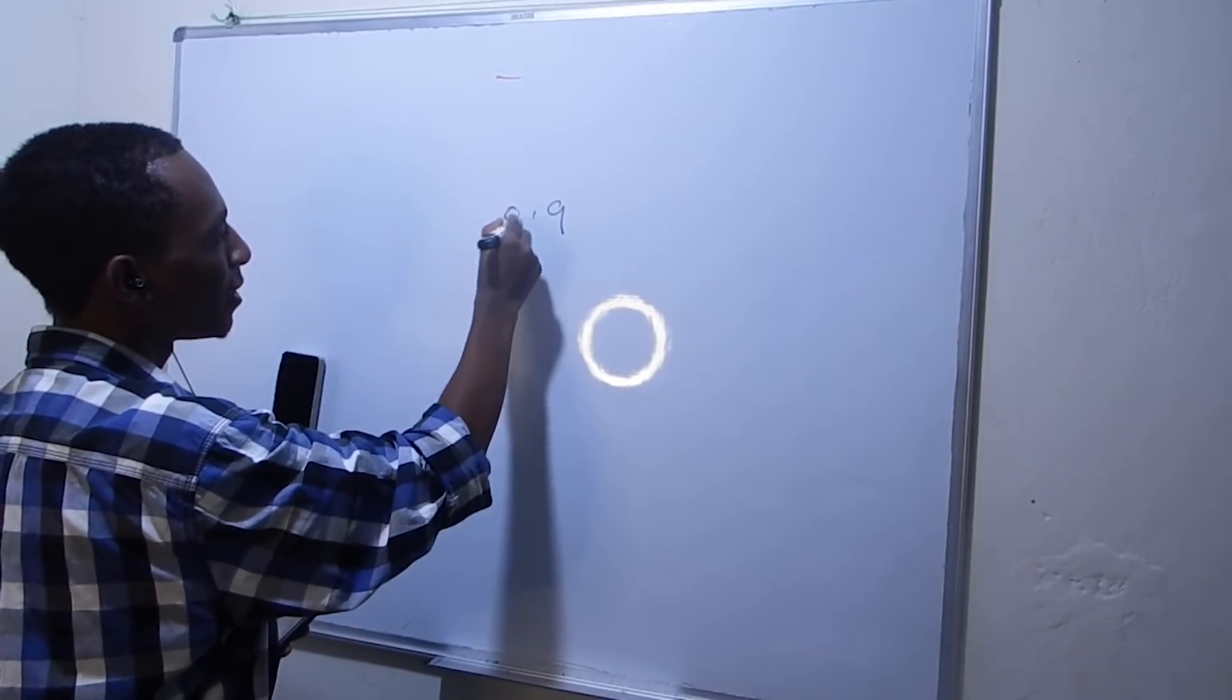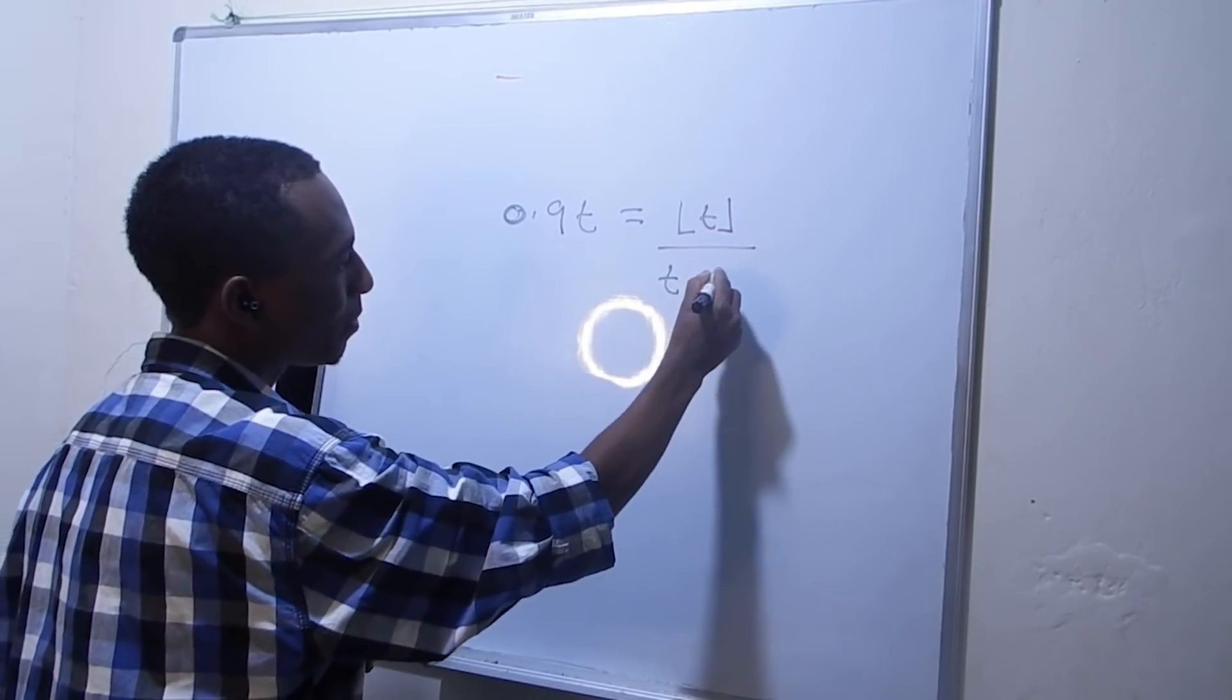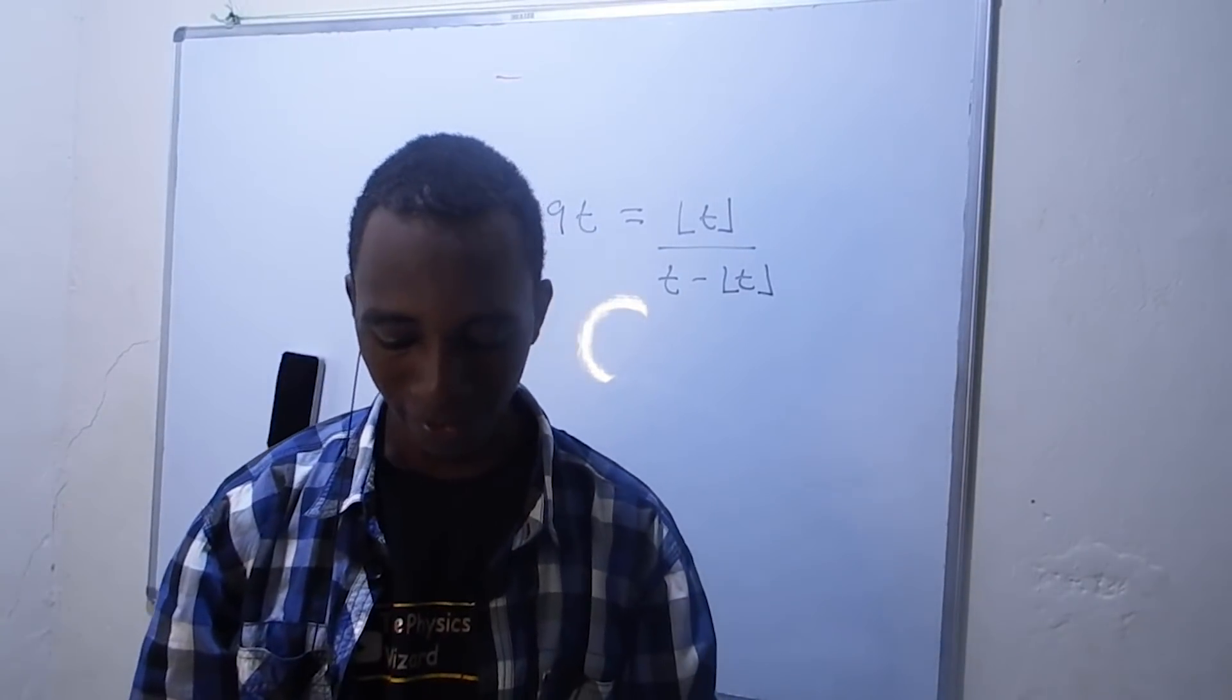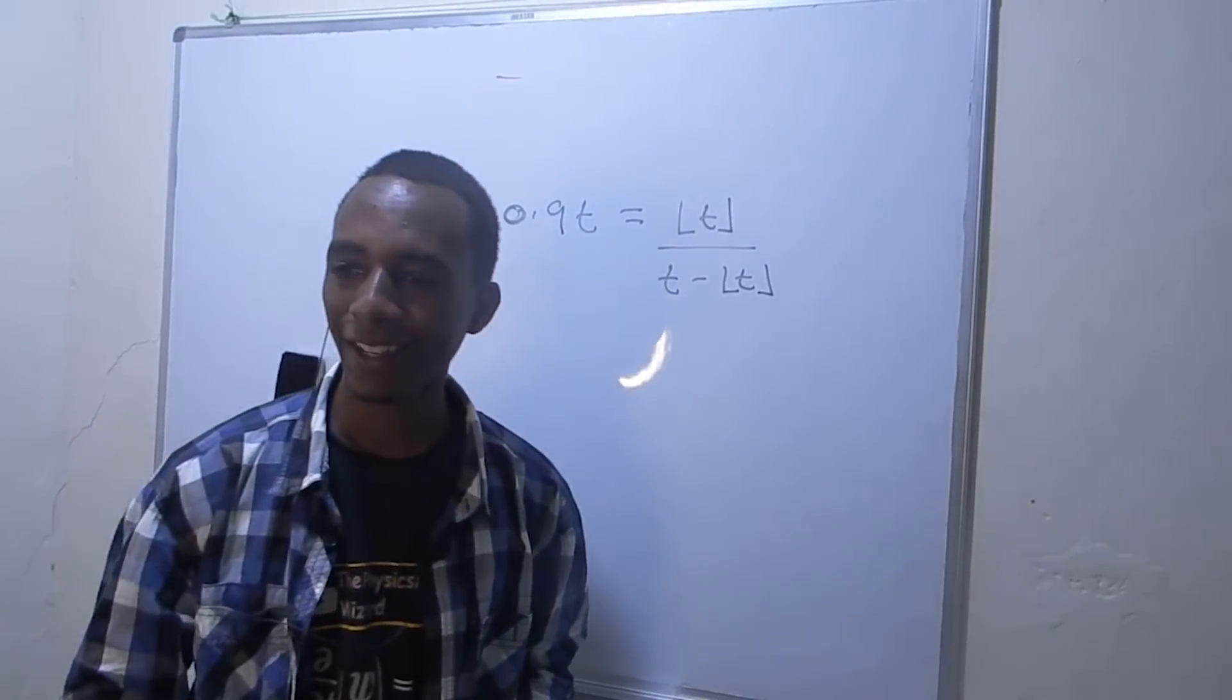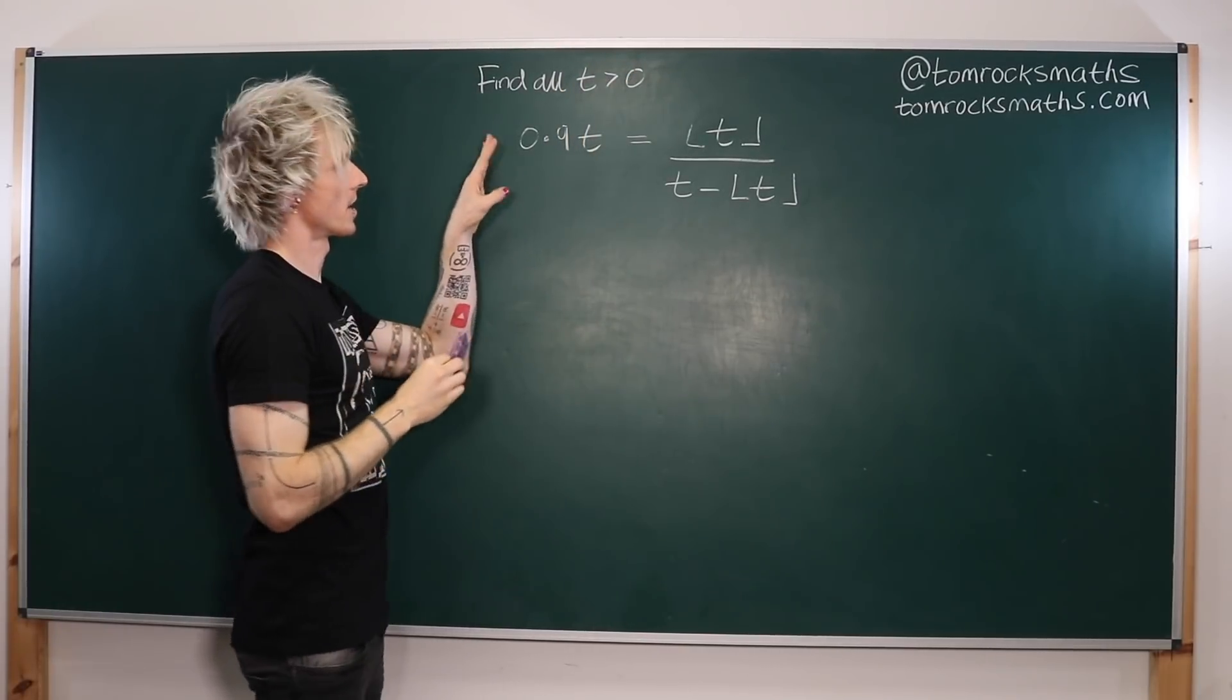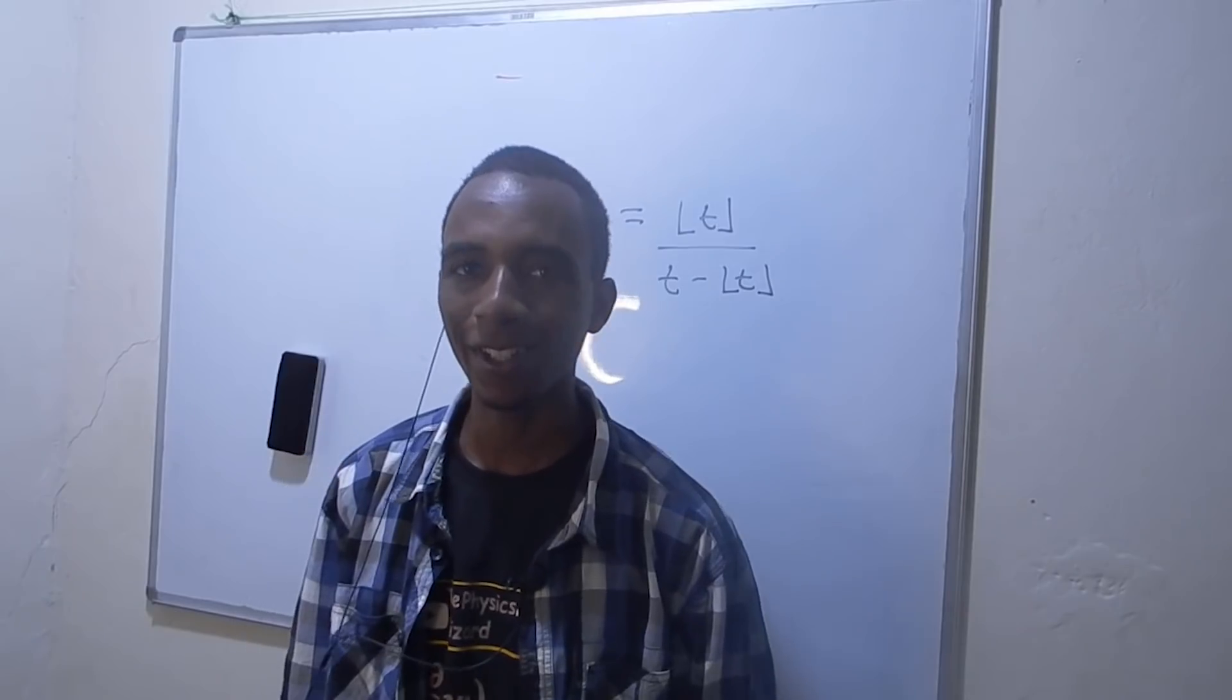So it's 0.9, so 0.9t equals, so we have the floor of t divided by t minus the floor of t, and so that's the equation. I'll read out the question. So it goes, you have to find all positive values of t that satisfy this equation here. Okay, so I think I've written this out correct, so we're trying to find all t greater than 0, satisfying 0.9 times t is equal to the floor of t divided by t minus the floor of t. Yeah, sure, that's it.